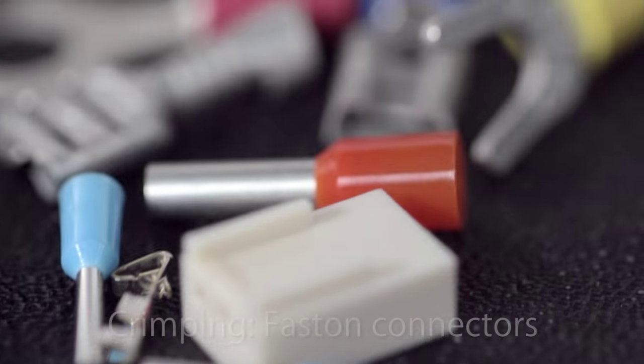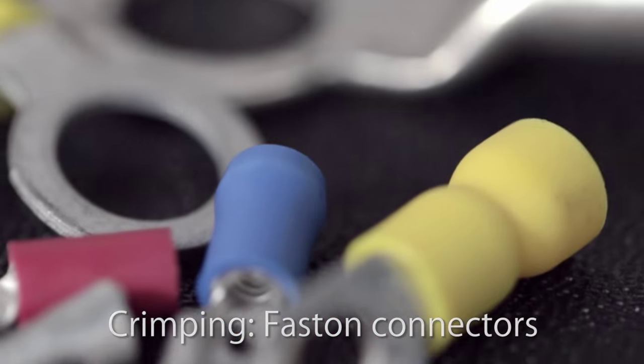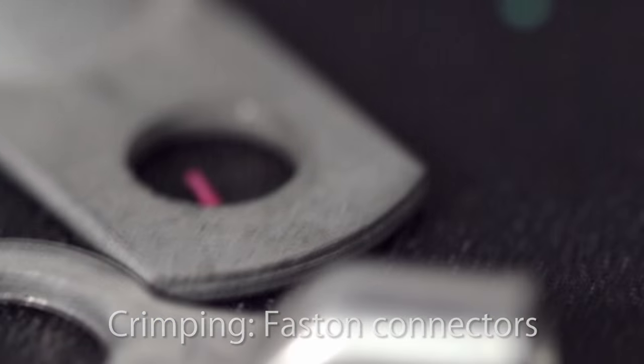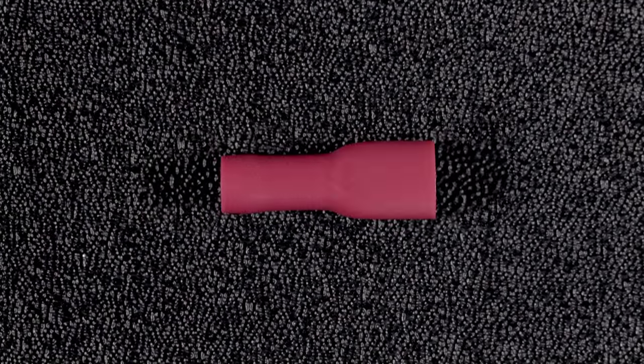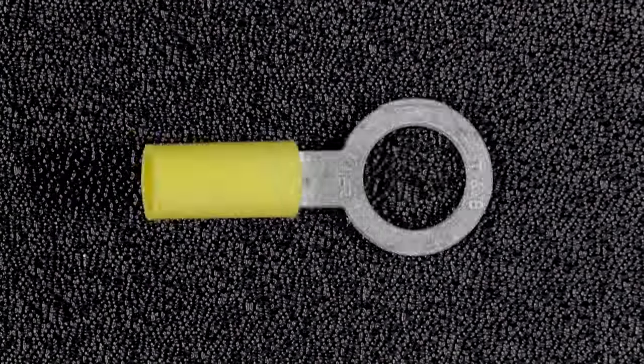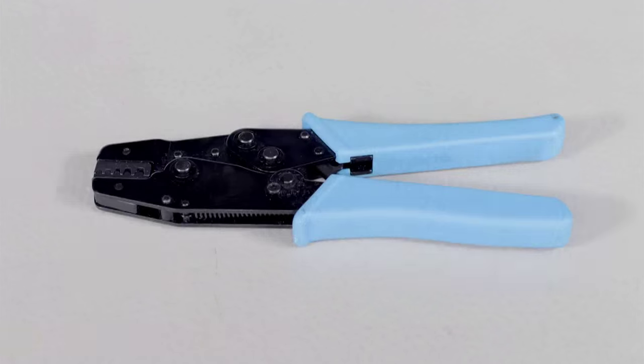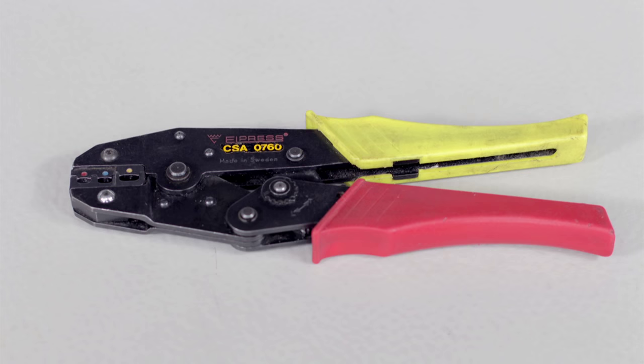Crimping is a process for mechanically attaching specialised connectors to multi-strand wiring. There are literally thousands of different types of crimp for different applications. Each type of crimp has a dedicated crimping tool to apply it.